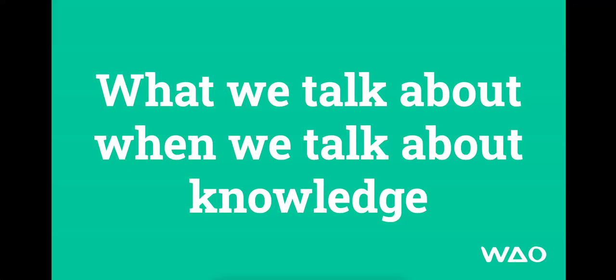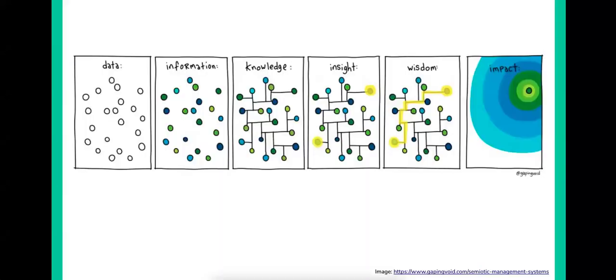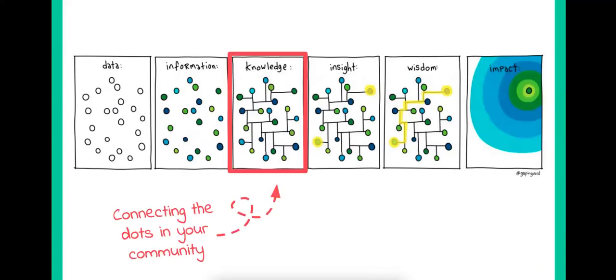Let's start from the beginning — what do we mean when we talk about knowledge? We start with an image showing the difference between data, information, knowledge, insight, wisdom, and impact. We're really interested in the knowledge bit. That's all about connecting the dots in your community: random bits of information connected together in ways which create meaning — that's knowledge.